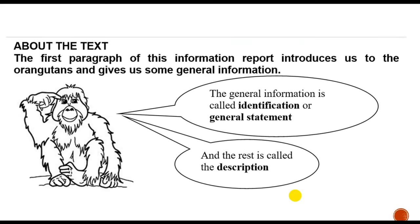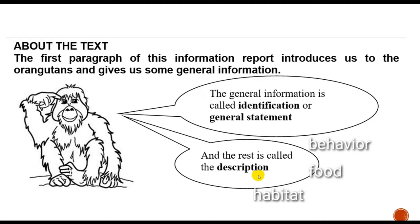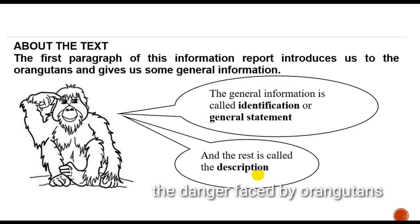After you have read the text, you can see that in report text, usually there is the general information at the beginning — we call that the identification or general statement. It consists of general information of the thing. And then the rest of the text is called the description. You can describe about the behavior, the food, the habitat, and also the danger faced by, in this case, orangutan.